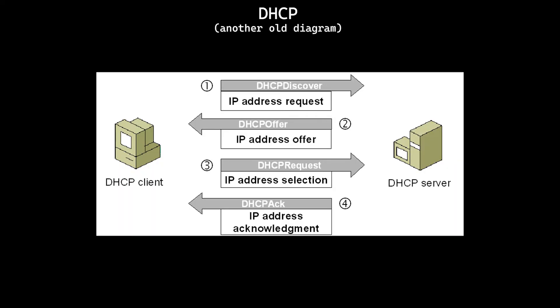A DHCP server. In order to do almost anything useful on a network with a device, it requires an IP address. While IP addresses can be manually assigned, it's much more common to see them dynamically assigned using Dynamic Host Configuration Protocol, or DHCP. When using DHCP, a device on the network will discover and contact the DHCP server and receive an IP address lease. This lease has some duration after which it can expire and the IP address will return to the server's pool. Most home users utilize the DHCP server on their router. Aside from being convenient, this arrangement also ensures that the gateway, DNS servers, subnet mask, and other networking properties for the local IP address are correct. Without DHCP, most home users would struggle to set up their LAN.